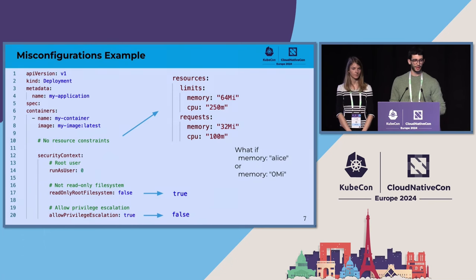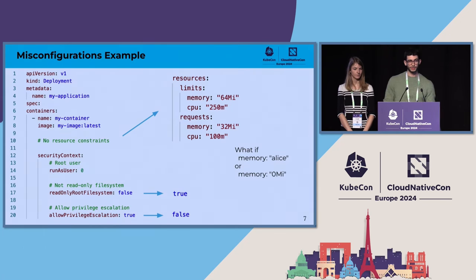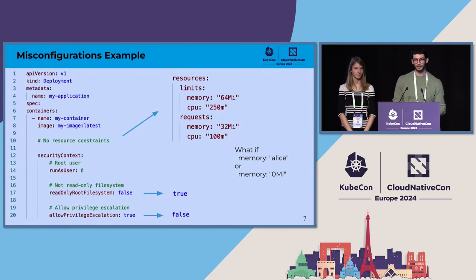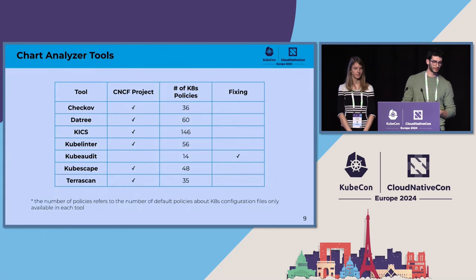For example, they require you to add limits and requests for memory and CPU. You can define, for example, memory equal to 64 megabytes, which seems reasonable. However, whenever you are asked to add a new piece of configuration, you can also raise a lot of what-if questions — what if we define memory equal to Alice, or what if we define memory equal to zero? Will this new configuration still be accepted by a tool, or will it still be able to deploy on the cluster? This was our starting point.